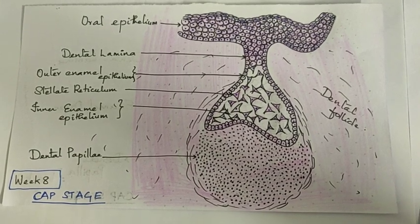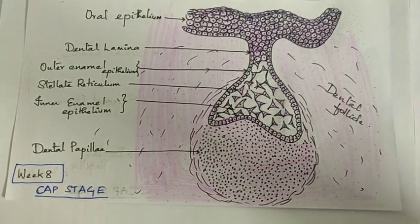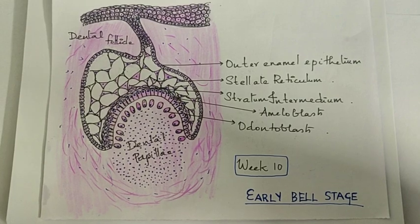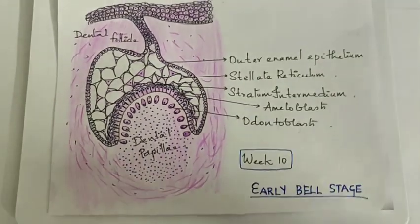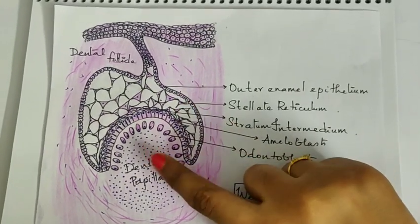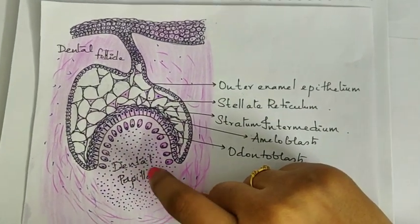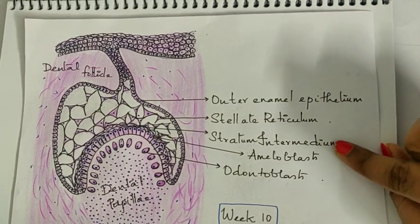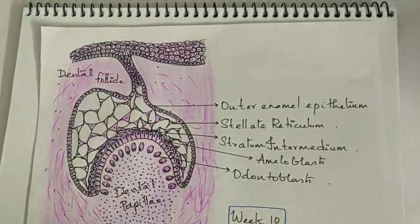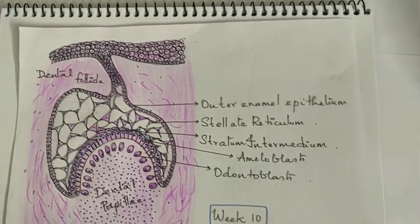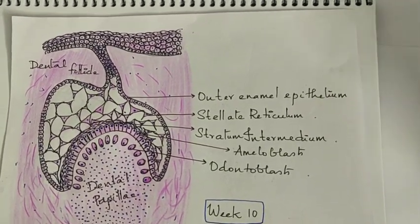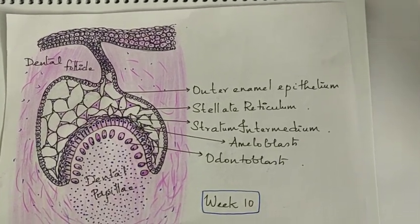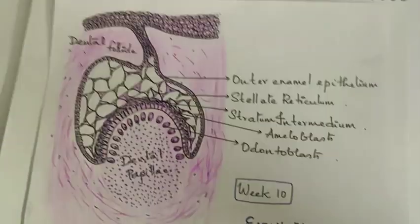The cells further differentiate and enter the early bell stage. In this stage, there is differentiation of the inner enamel epithelium into ameloblasts and the dental papillary mesenchyme cells into odontoblasts. In addition, there is a stratum intermedium immediately above the ameloblasts, which contributes to enamel formation by supplying alkaline phosphatase and other organic materials required for enamel formation.